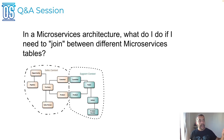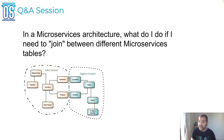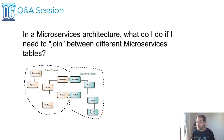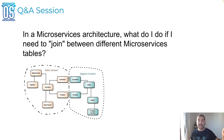The third question: in a microservice architecture, what do I do if I need to do a join between different microservice tables? You can do an orchestration process. You can orchestrate different calls to different services, join these calls in the application layer, and return to the user. Of course, there are several concerns about that. The first one is consistency, because there's no guarantee of consistency doing it this way. Another perspective is the complexity of doing that. And perhaps you are doing that because there is a missing piece or a bug inside your domain design.